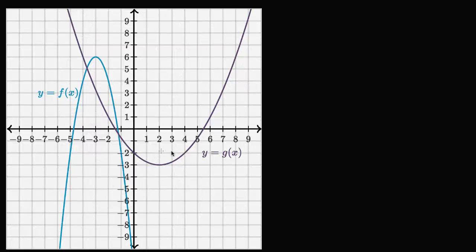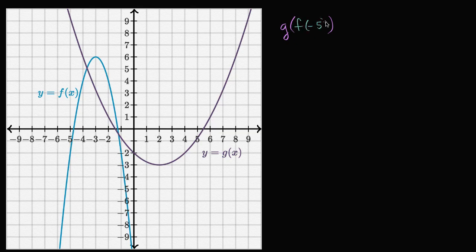So we have the graphs of two functions here. We have the graph y equals f of x, and we have the graph y is equal to g of x. And what I want to do in this video is evaluate what g of f of negative five is.